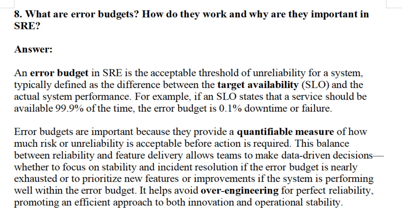Question eight: what are error budgets, how do they work, and why are they important in SRE? An error budget in SRE is the acceptable threshold of unreliability for a system, typically defined as the difference between target availability (the SLO) and actual system performance. For example, if an SLO states that a service should be available 99.9% of the time, the error budget is 0.1% downtime or failure.